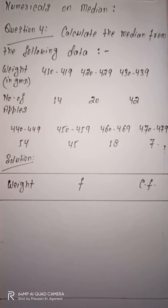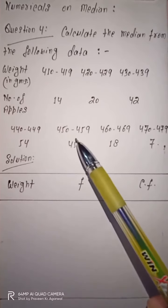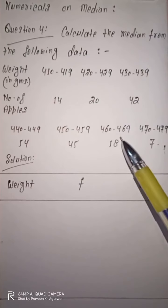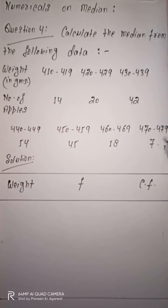The question is: calculate the median from the following data. The data gives weights in grams and number of apples. Weight classes: 410–419, 420–429, 430–439, 440–449, 450–459, 460–469, 470–479.